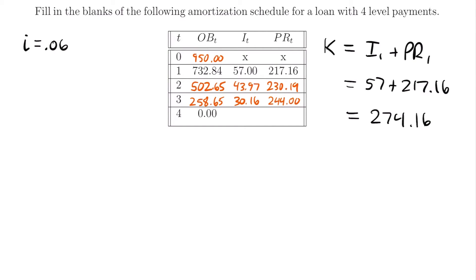For our last two spots, we calculate the interest accumulated at time equals four by multiplying the interest rate by the outstanding balance at time equals three: 0.06 times $258.65 equals $15.52. Subtracting this from the payment of $274.16 gives the principal at time equals four: $258.64. Typically this should match the outstanding balance exactly, but due to rounding we have 64 cents instead of 65 cents — a rounding error of one cent, which is essentially zero. Since we're only off by $0.01, we have correctly filled in the amortization schedule.